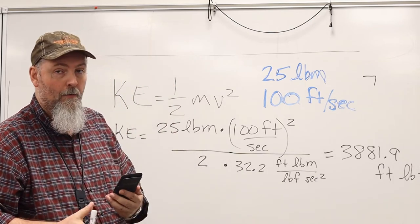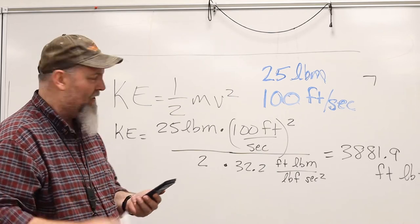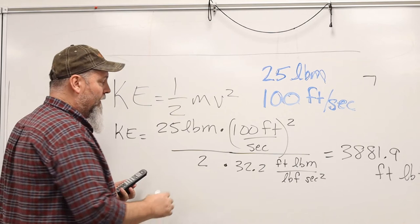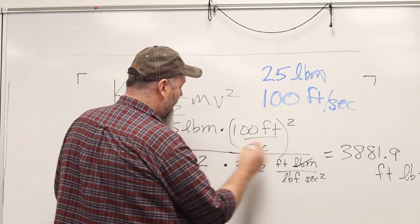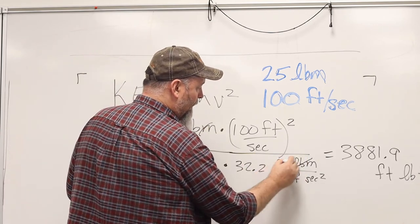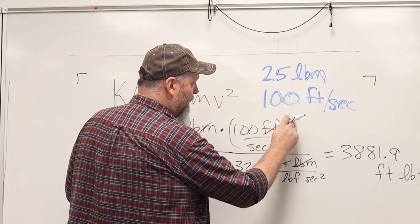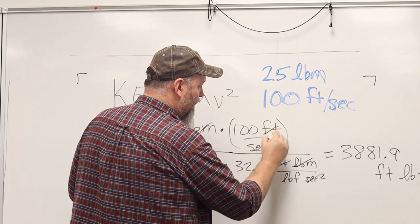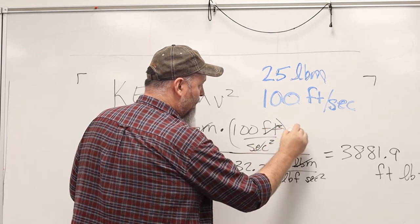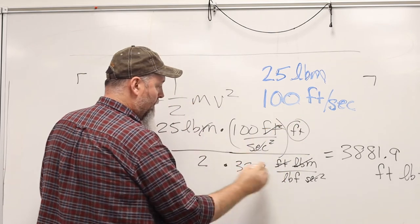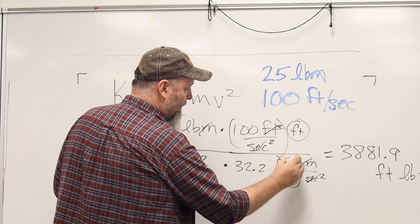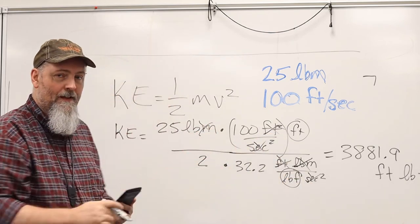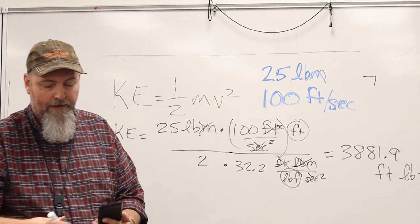3,881.9 foot pounds force. But this looks real messy, right? And I haven't done any unit analysis here to make sure that these cancel, foot with one of the foot with the squared there. Second squared, which leaves me a foot pounds force. Everything else is cancelled out. But that's real messy and it's going to be real hard to keep track of.